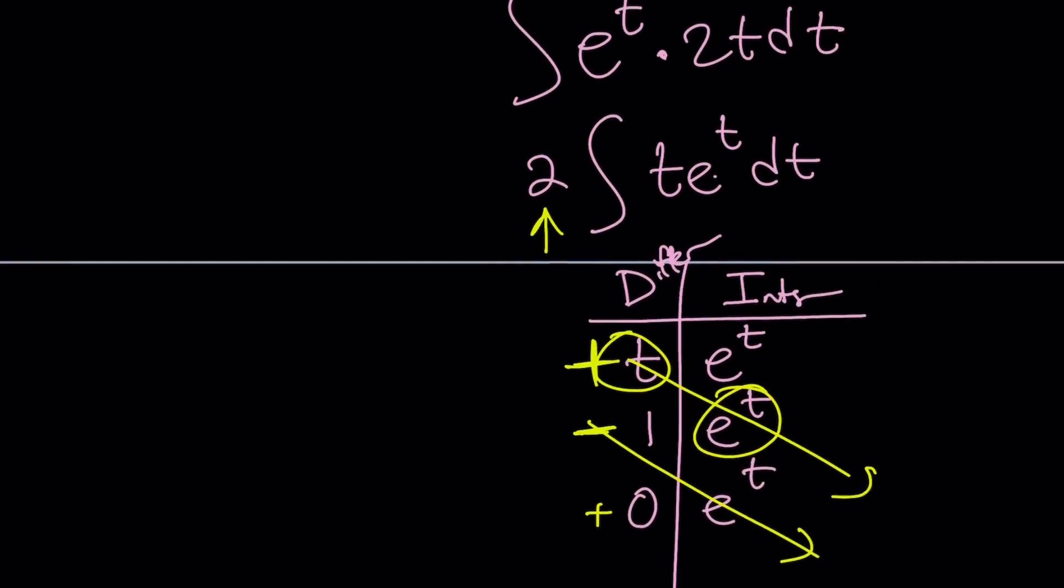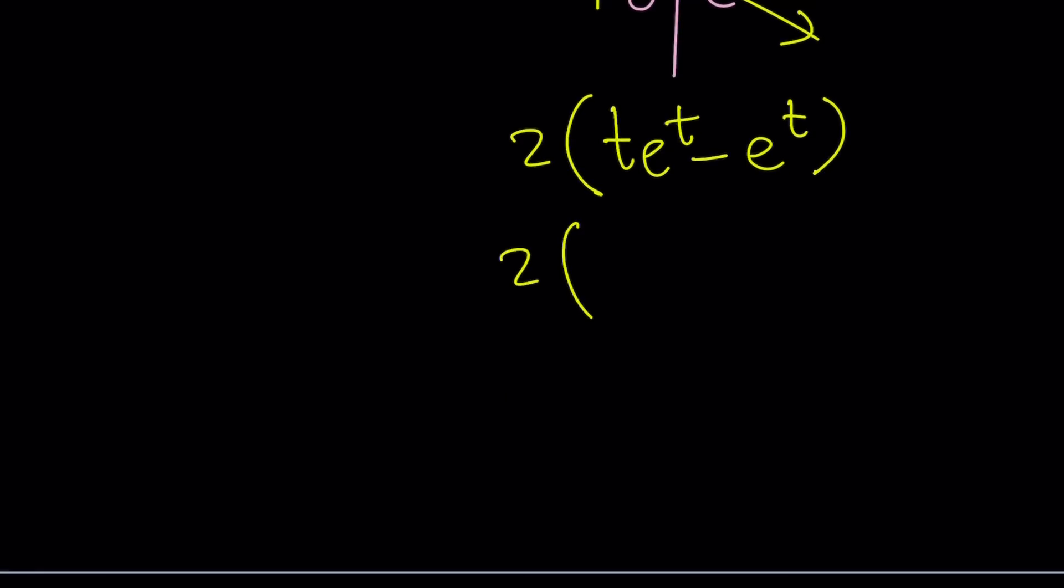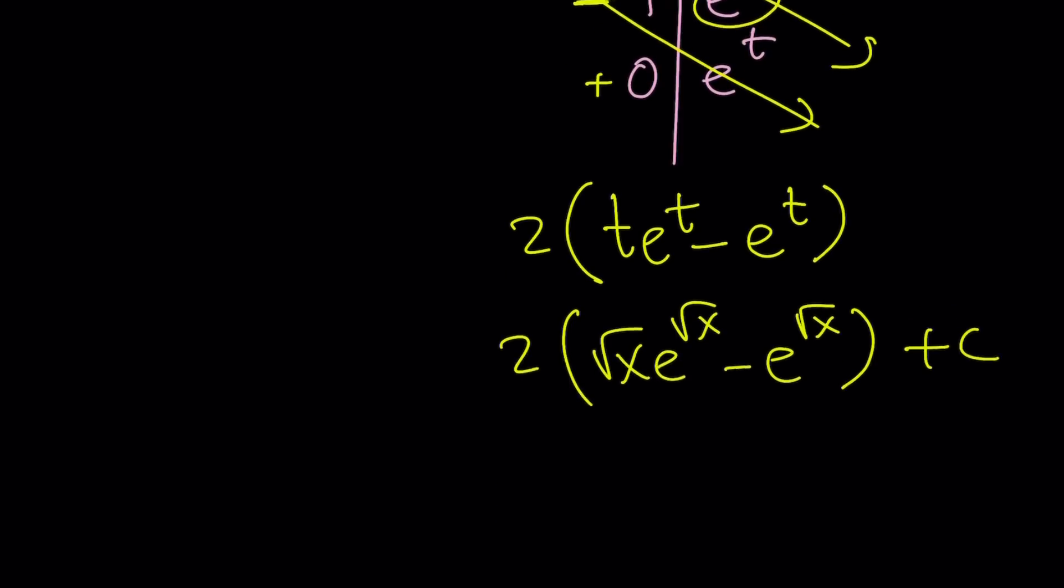But now back substitute t is equal to square root of x. And we get square root of x e to the power of square root of x minus e to the power of square root of x. If you really want to put a c, go ahead and do it. Some people are very picky about c. And some professors are extremely crazy about it. And if you don't put it, they don't give you any points. At least they take off some points. So constants are important.